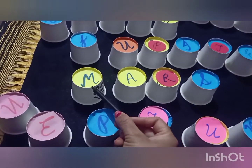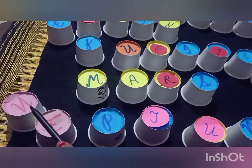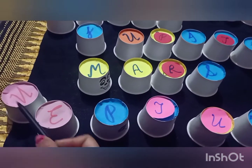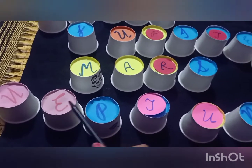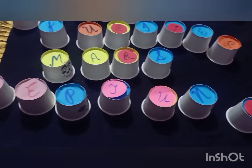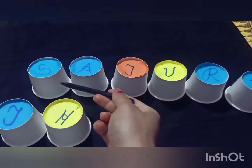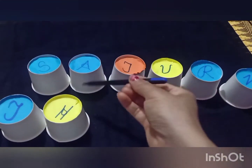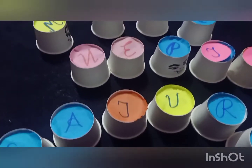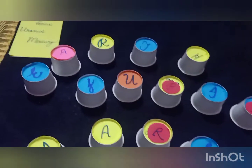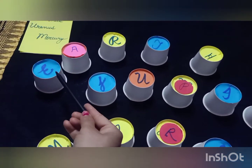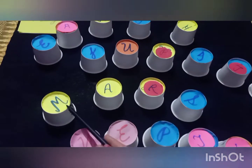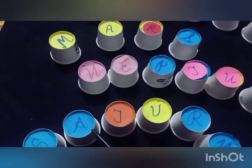After M we will check N. Yes, we have one more planet with N — Neptune, N-E-P-T-U-N-E. Now we have just one left and that is Saturn. So we will arrange it last. Let's have a look: we have arranged the planets in alphabetical order. The order is: Earth, Jupiter, Mars, Neptune, Saturn.